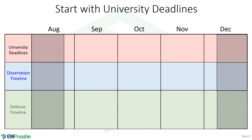The first thing you'll want to do is lay out all of the deadlines imposed by your university. This should be documented on the university website somewhere. The first one is a date where you will have to petition to graduate. In this particular example, I'm using the University of Texas at El Paso, and in fall 2022 there's a September 30 deadline to petition to graduate.